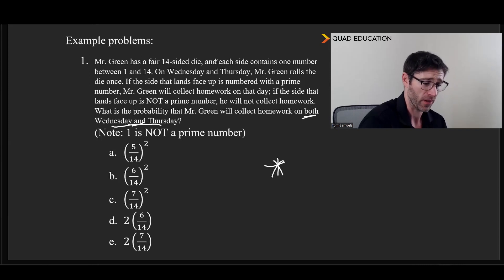Mr. Green has a pair of 14-sided dice, and I wonder what that would look like. But it has one number between 1 and 14 on each side. On Wednesday and Thursday, Mr. Green rolls the die once. If the side that lands face-up is numbered with a prime number, Mr. Green will collect homework on that day. If the side that lands face-up is not a prime number, he will not collect homework. What's the probability that he will collect homework on both days? So that's collect and collect. And so very important note here: 1 is not prime. This is interesting, and they should point this out in the test. 1 isn't prime because it needs to be divisible by 1 and itself, and 1 is only divisible by 1.